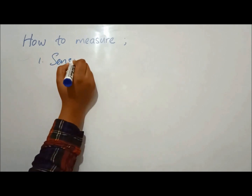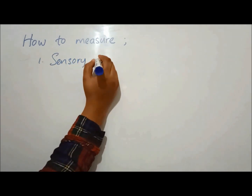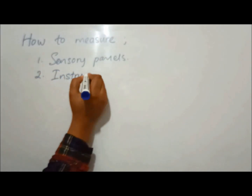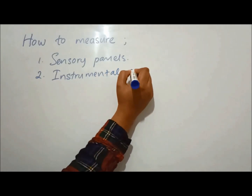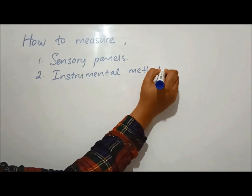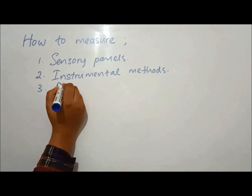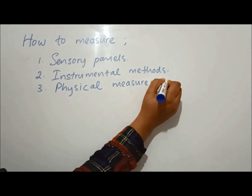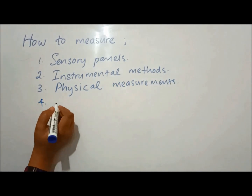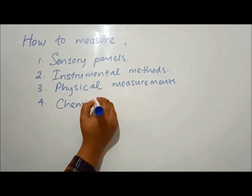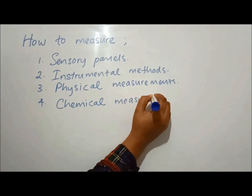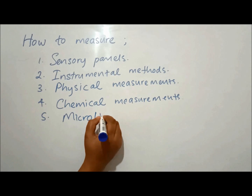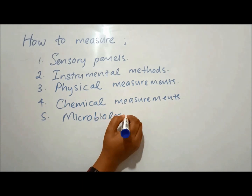Measurement of the changes in eating quality on storage requires the use of sensory panels and sensory techniques. Physical measurements via instrumental methods are also used — the most commonly used physical tests measure changes in texture. Chemical analyzers play a vital role in shelf life testing, as they can measure the endpoints of chemical reactions occurring in food during storage, or confirm results obtained by sensory panels.